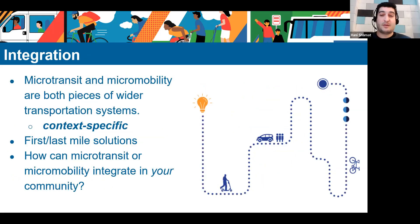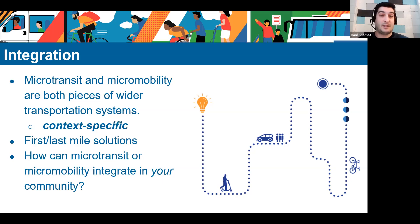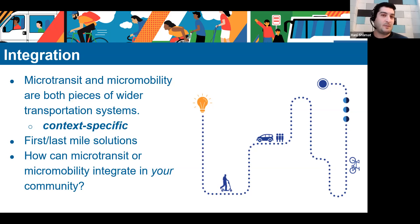When talking about how microtransit and micromobility relate, it's really about how they fit into overall transportation networks — it's about integration. That's very context-specific. In denser areas or areas with good bike infrastructure, bike share and scooter share can be great first-last mile solutions, getting people to other transit services. In more rural areas, microtransit might fulfill the same purpose — one agency framed it as the 'first-last five mile problem.'